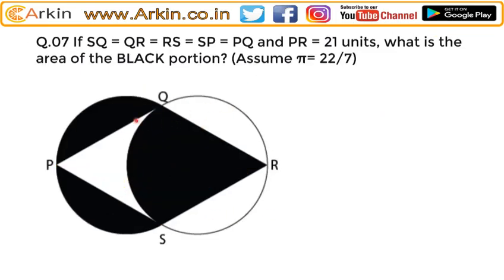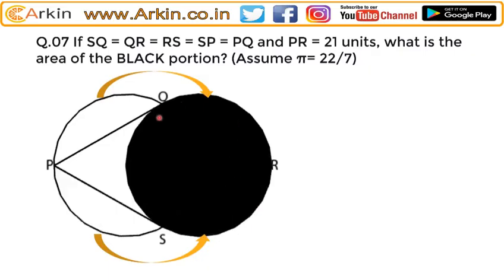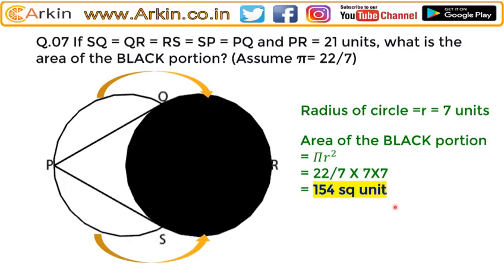The black part is actually the area of the circle. Because we have already determined the radius of the circle is 7 units, the area of the black portion will be pi r squared — that is 22/7 into 7 into 7, which equals 154 square units. So that is the answer to this question.